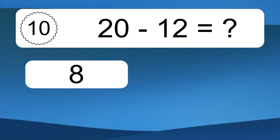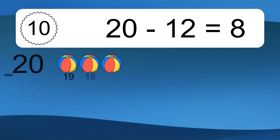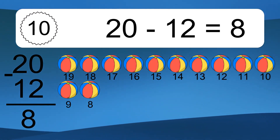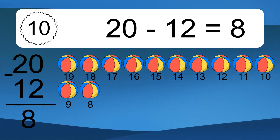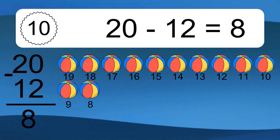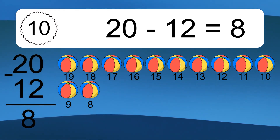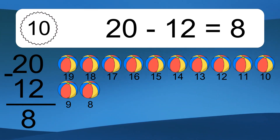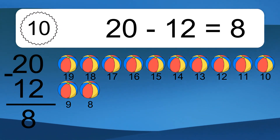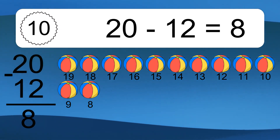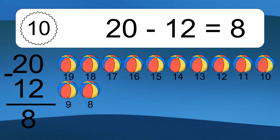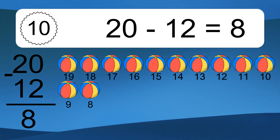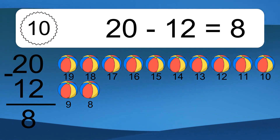20 minus 12 equals what? 20 minus 12 equals 8. Let's count it: 19, 18, 17, 16, 15, 14, 13, 12, 11, 10, 9, 8.